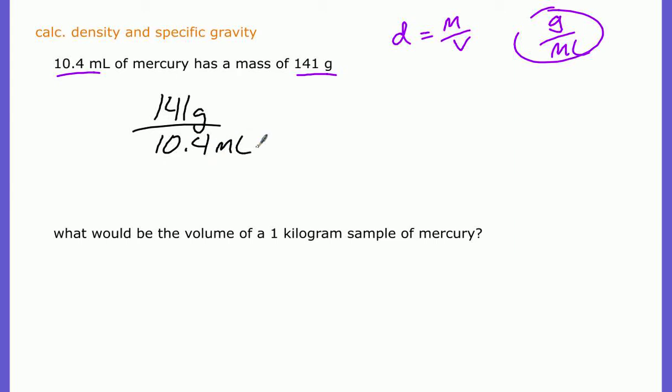Very simply, I take my 141 grams and I divide that by 10.4. That should give me grams per milliliter as an answer. Let me grab my calculator here real quick. 141 divided by 10.4, I get 13.558 and so on. I do know that I only need three sig figs in my answer, so I'm going to round that appropriately and I'll get 13.6 grams per milliliter.